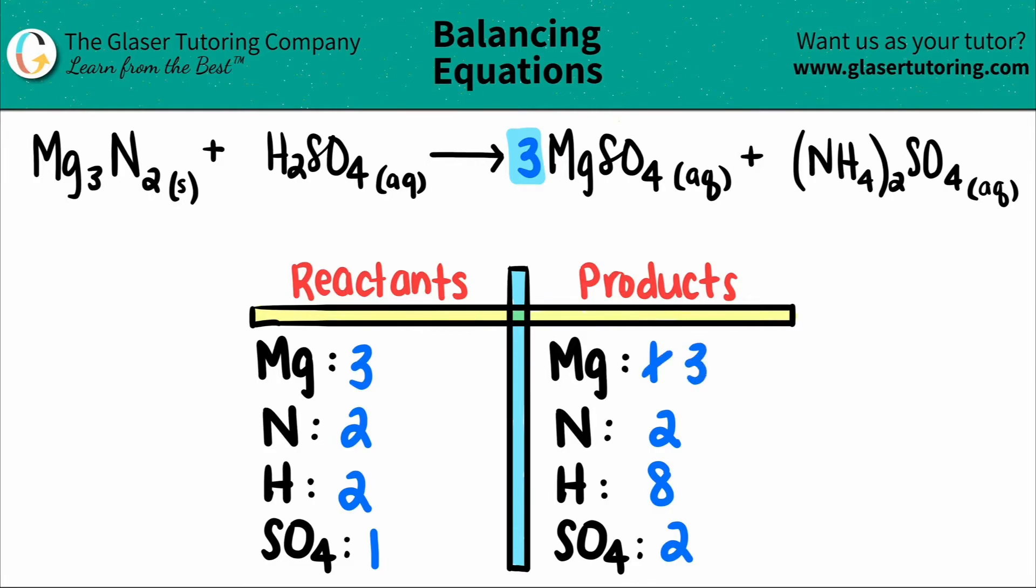There are three magnesiums. That's what we wanted. And now remember I have sulfate here and sulfate here, so I have to add both of them up. I have three sulfates plus one sulfate here, so three plus one is a total of four, so I'm just going to change my two and turn it into a four.